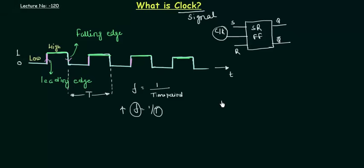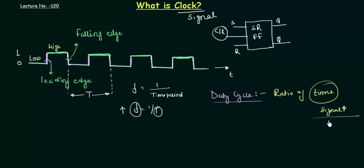So let's move to another point, that is our duty cycle. You will very frequently use this thing in digital electronics—duty cycle. The duty cycle is nothing but the ratio of the time, the time for which the signal is high, to the total time. So it's very simple.